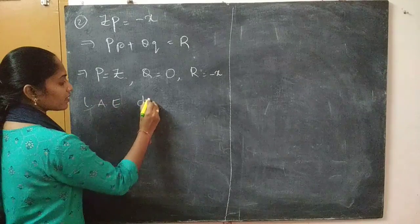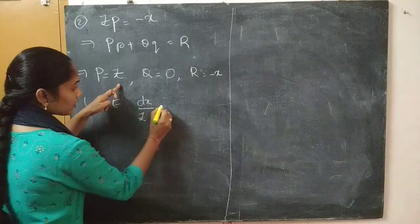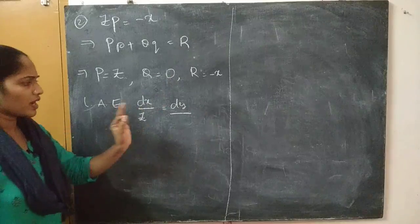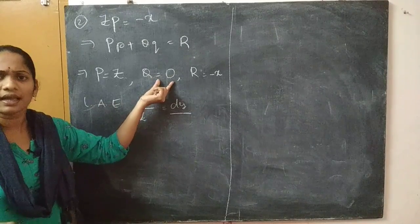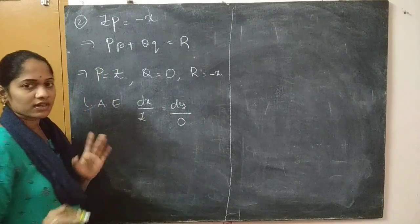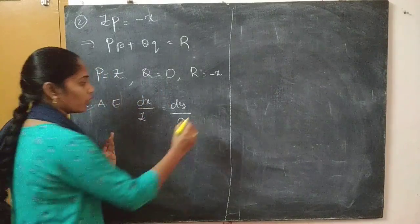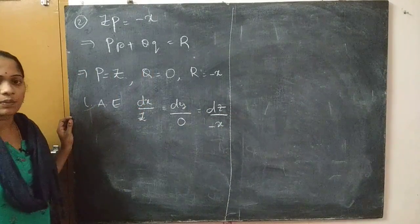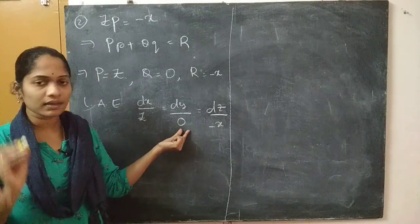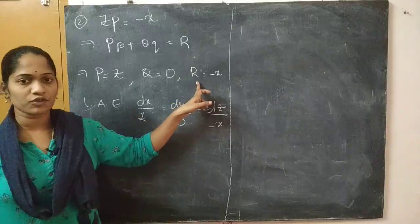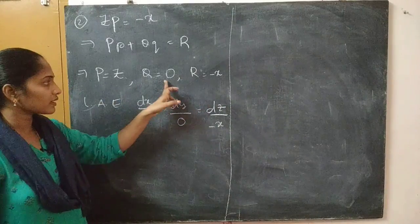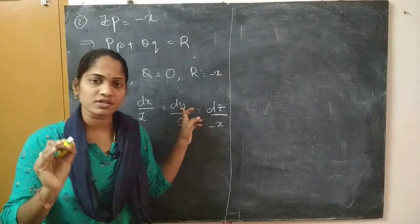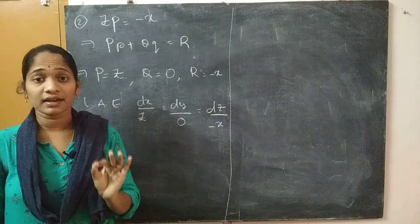After comparing, write Lagrange's auxiliary equation: dx by P equals dy by Q equals dz by R. Substituting: dx by z equals dy by 0 equals dz by (minus x). This is a very important point — when Q equals 0, you must still write 0 in the denominator. Whenever any function equals 0, the direct integration gives a constant value.